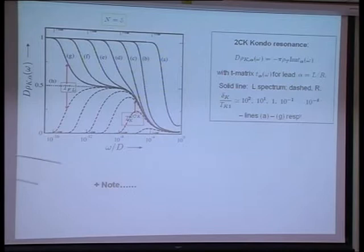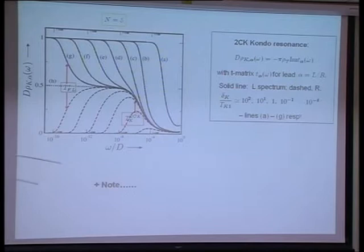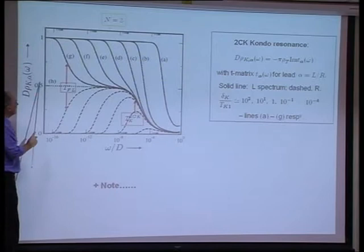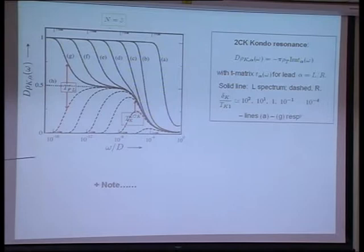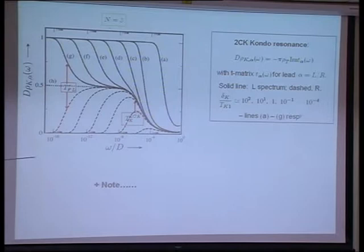One additional point that will become relevant later: if you take half the sum of the left plus the right Kondo resonances, you wouldn't see any sign of the Fermi liquid behaviour at all — the upturn and downturn exactly cancel. Taking the sum of the two, you actually get two-channel Kondo behaviour. That will become relevant later on.